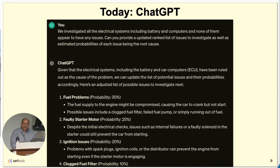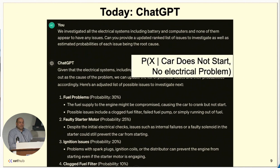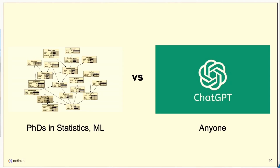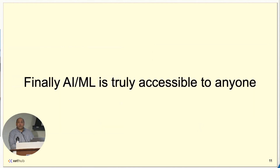Something amazing just happened here. I just did conditional probabilities without actually knowing anything about conditional distributions. Now, is the model calibrated? Mathematically sound? Who knows. But does it matter if it's useful? What's changed is that many things that would require a PhD in statistics or machine learning — like my co-founder Yucheng has — can now be done easily by all of us. AI and ML is truly accessible to anyone.